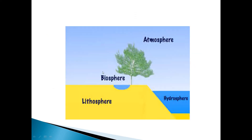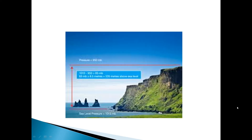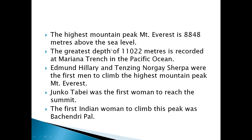Lithosphere includes continents only, and there are seven major continents — all land masses are connected with one another. There are two main divisions of the earth's surface: continents and ocean basins. The level of sea water remains the same everywhere, and from this sea level we measure the elevation or height of land, considering sea level as zero.